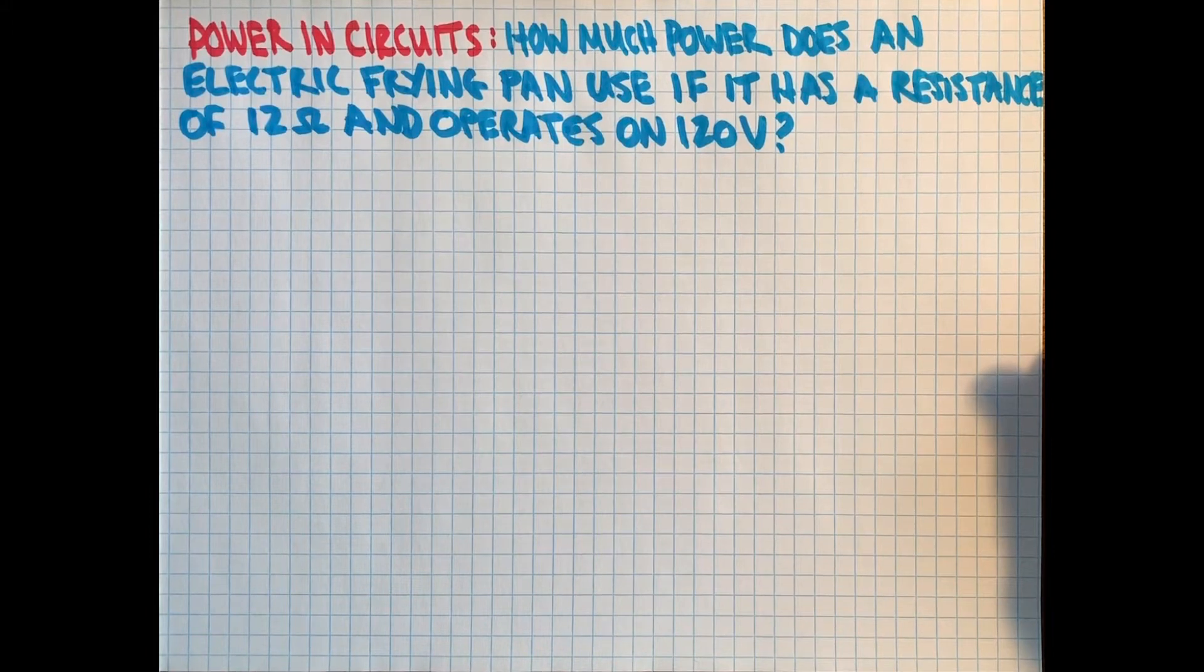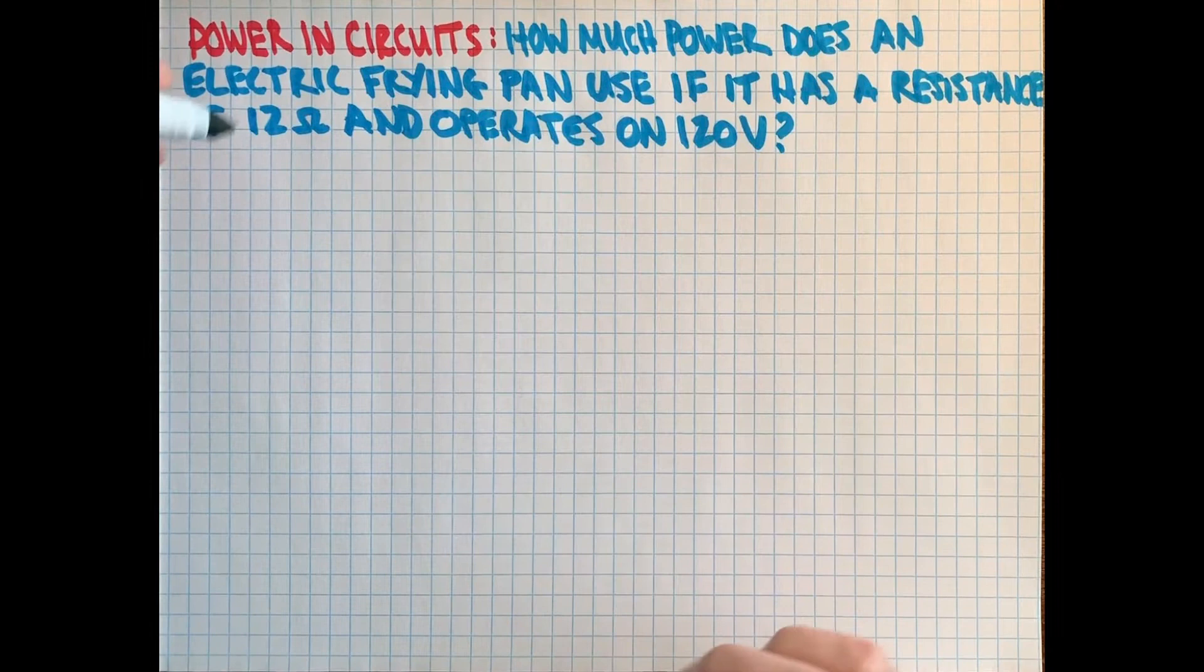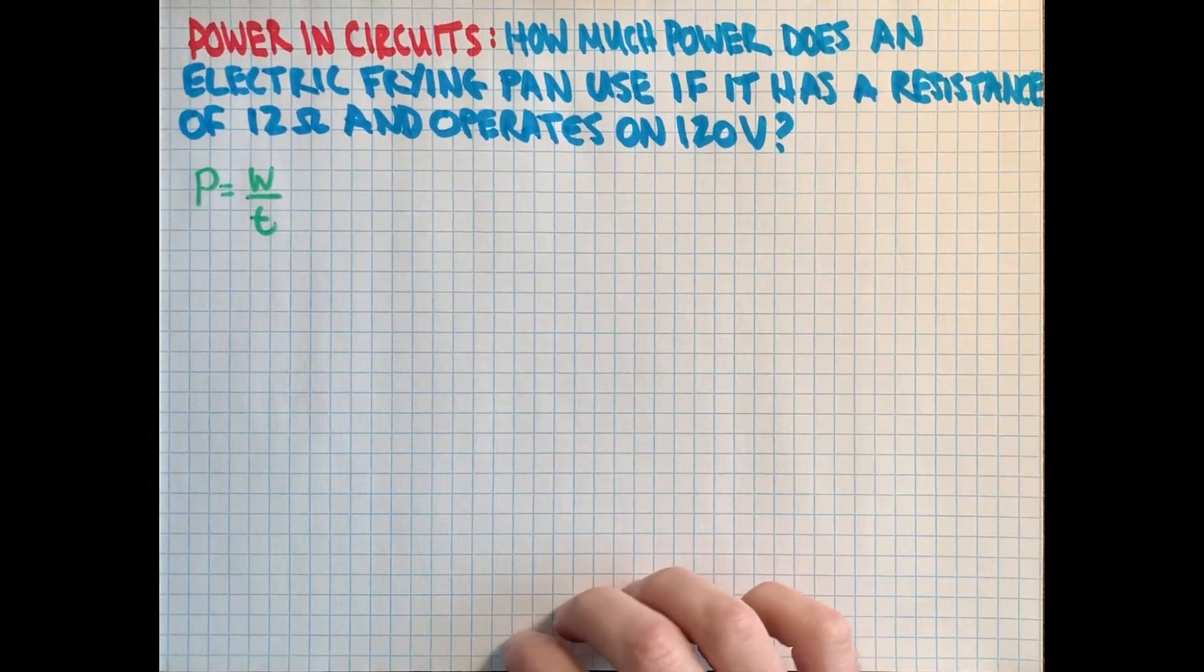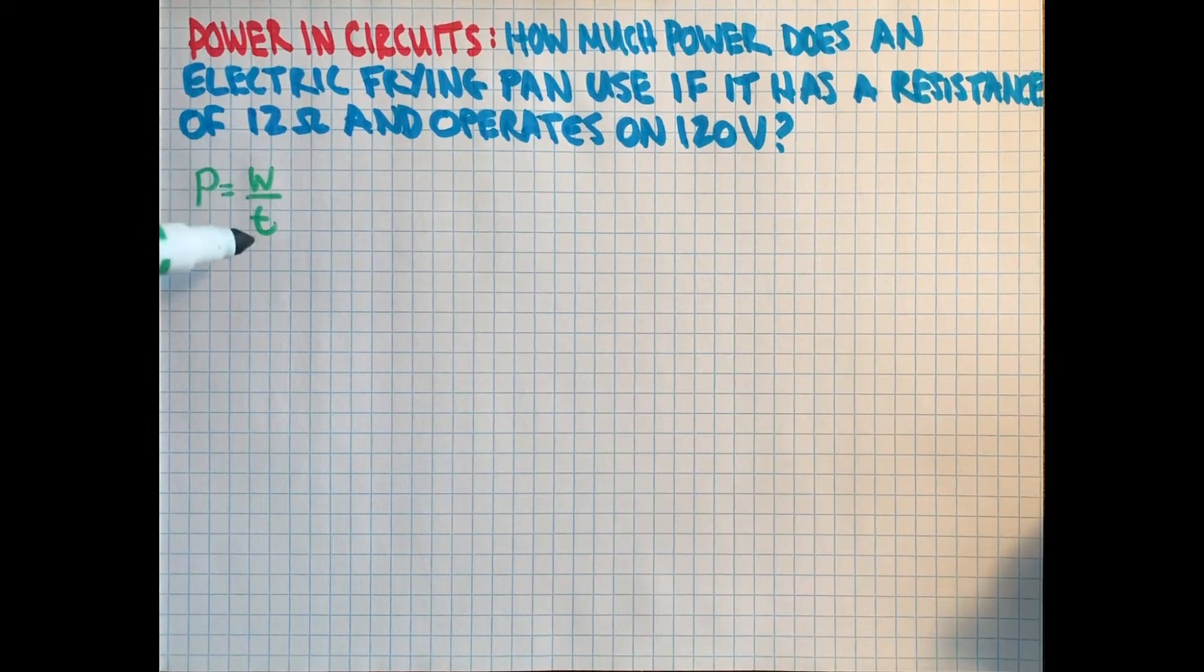How much power does an electric frying pan use if it has a resistance of 12 ohms and operates on 120 volts? So the first thing we have to think about is what is power? Power is a rate of energy use. In this case, it is defined as work over time, so it's a rate. The energy you use in a certain amount of time is the power.